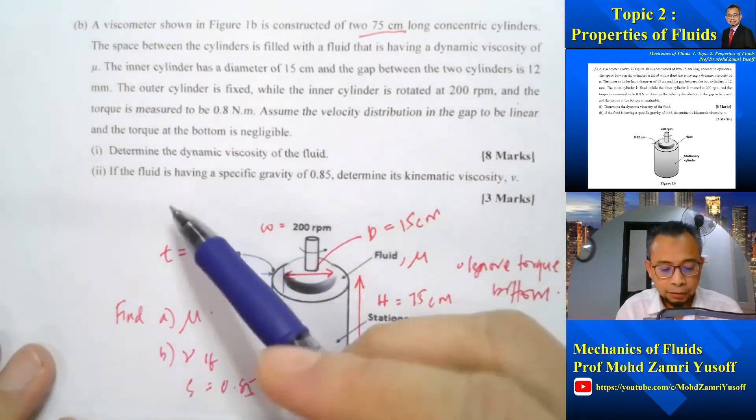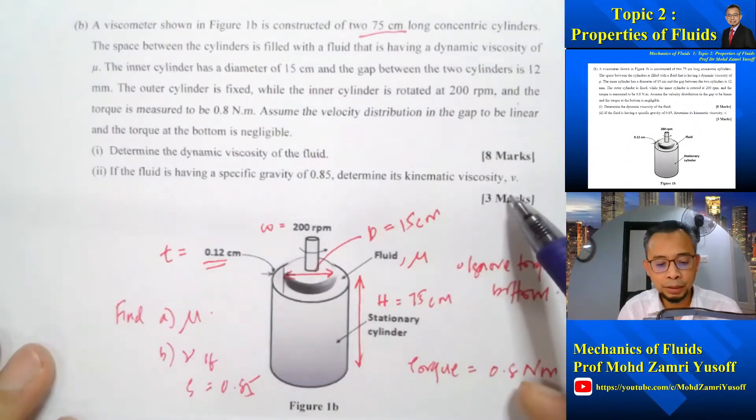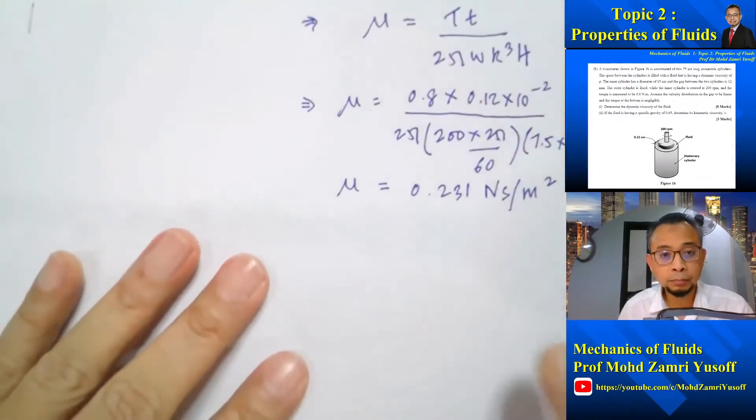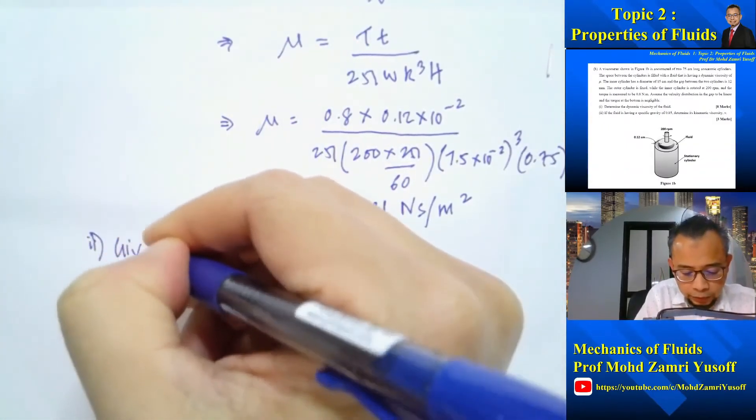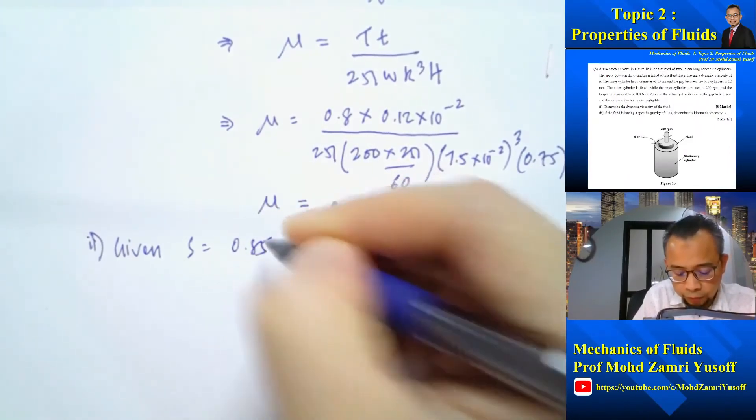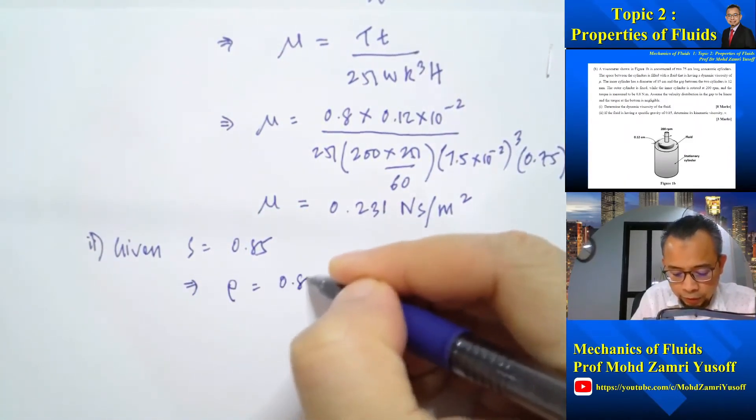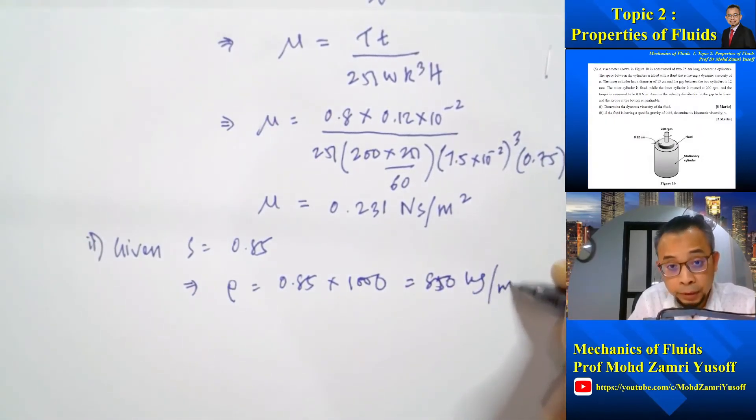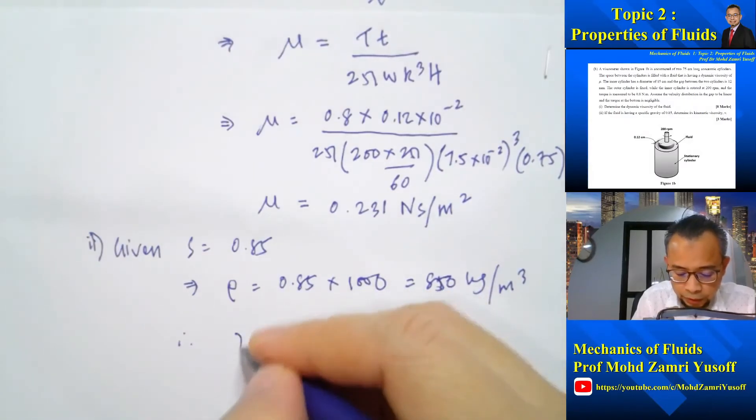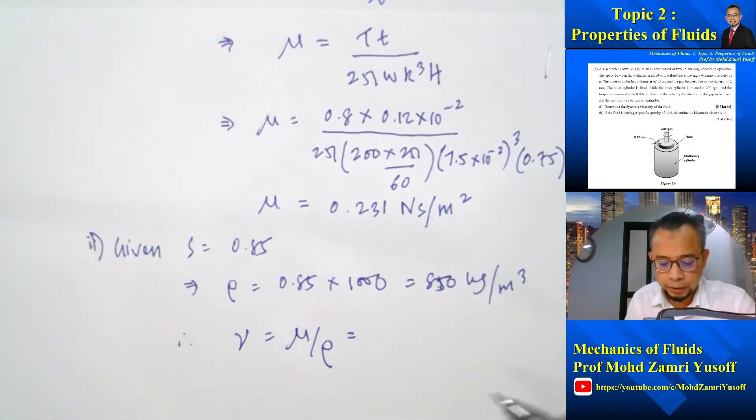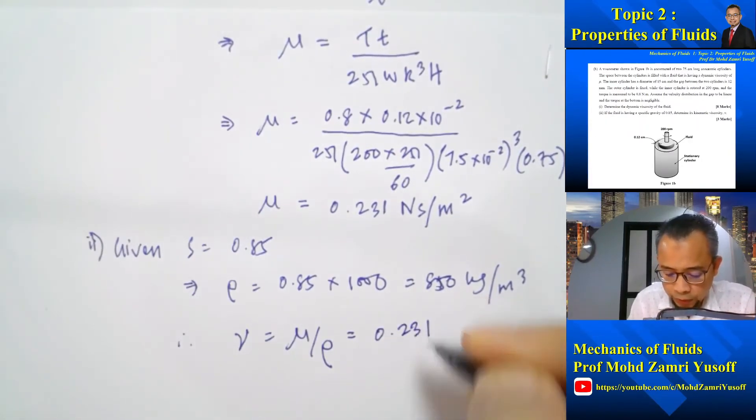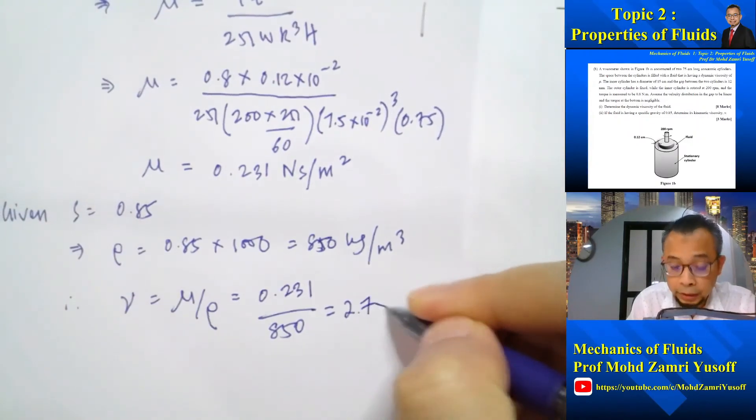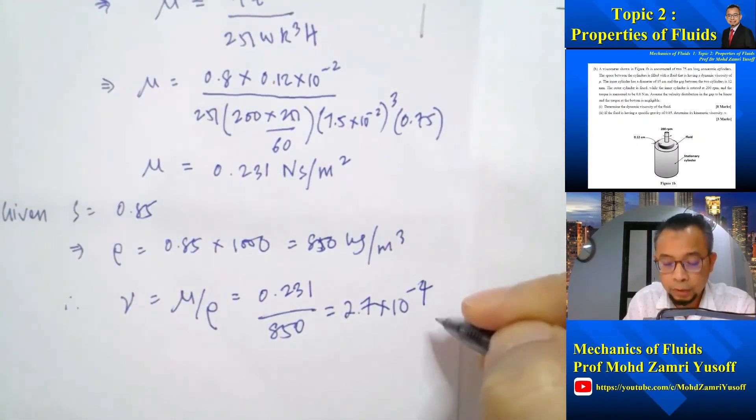The next part of the questions asks us to determine the kinematic viscosity given that specific gravity is 0.85. So given s equals 0.85, that means density is 0.85 multiplied by 1000, so 850 kilogram per meter cubed. So we can calculate nu which is mu divided by rho, so that's 0.231 divided by 850, so that gives us nu is equal to 2.7 times 10 to minus 4 meter squared per second.